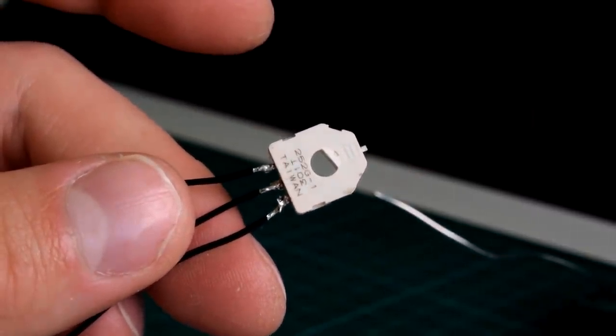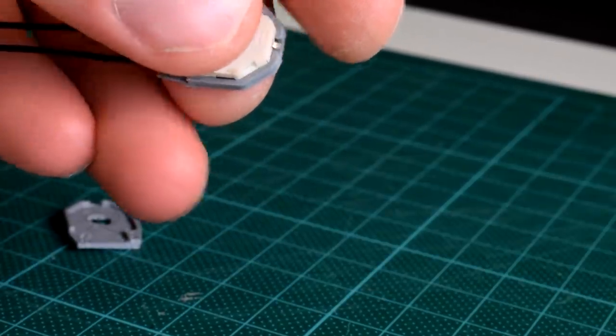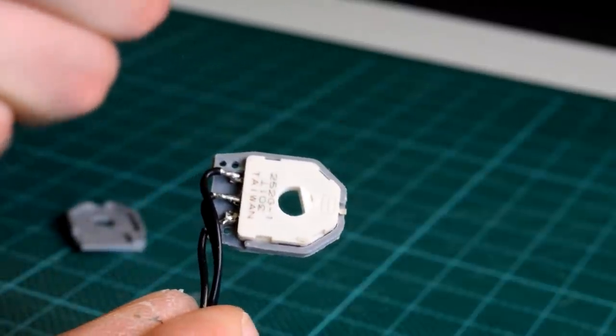So once the potentiometers have been soldered you can put them in the little potentiometer housing and make sure the wire exits through the open end of the housing.